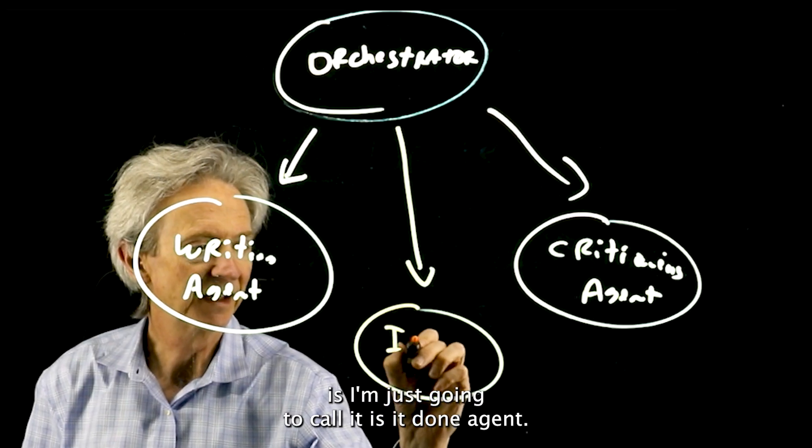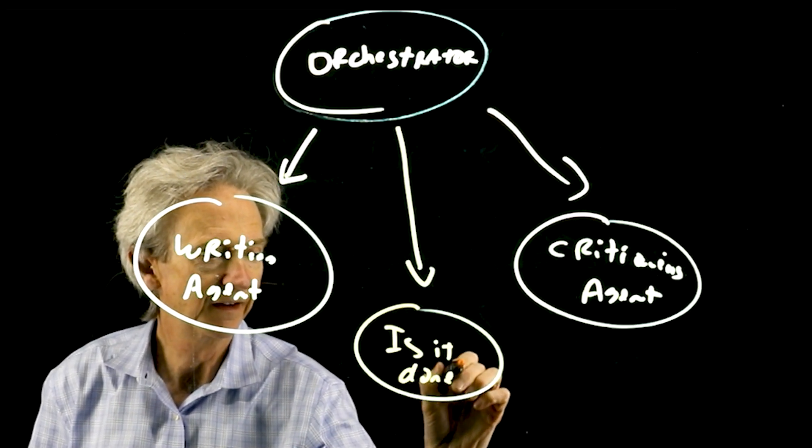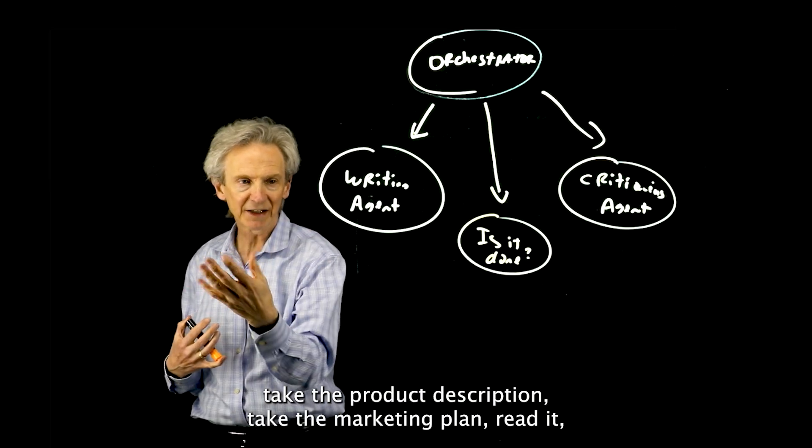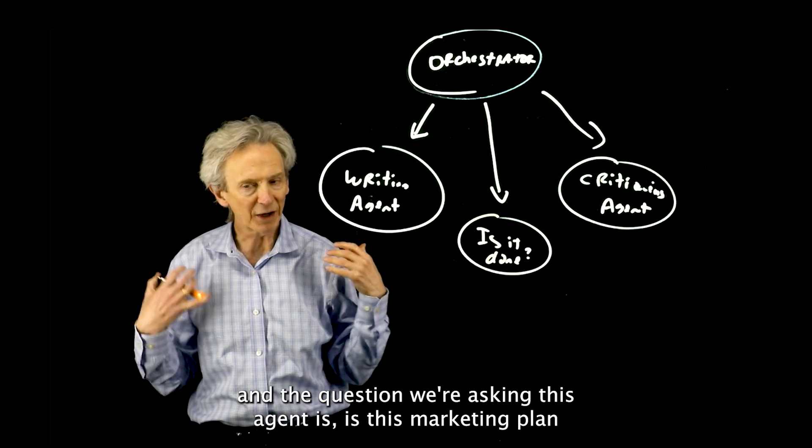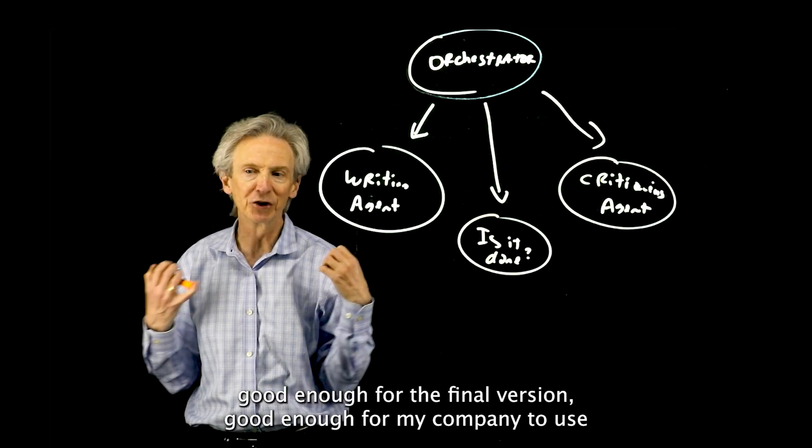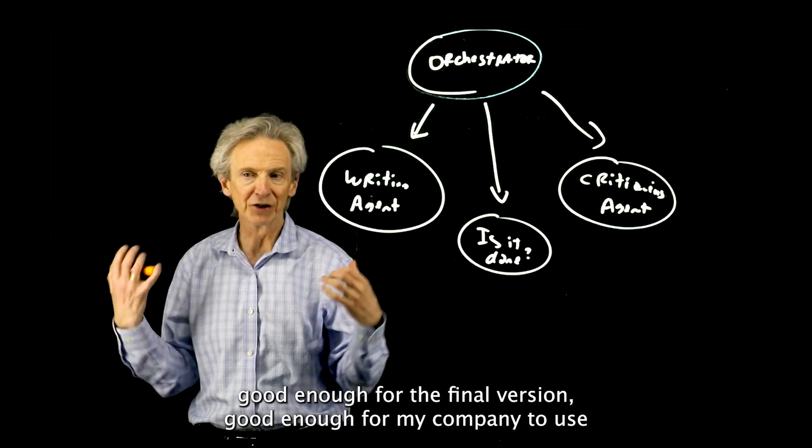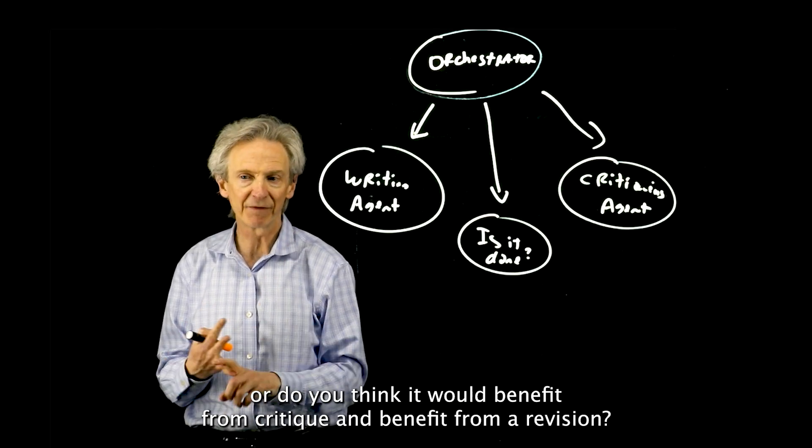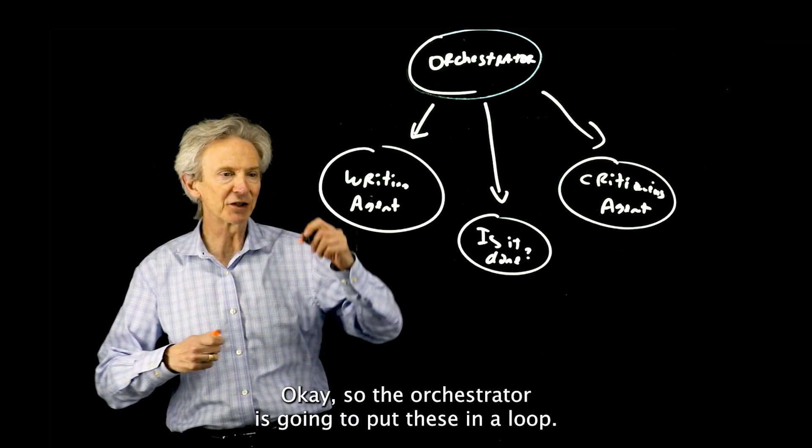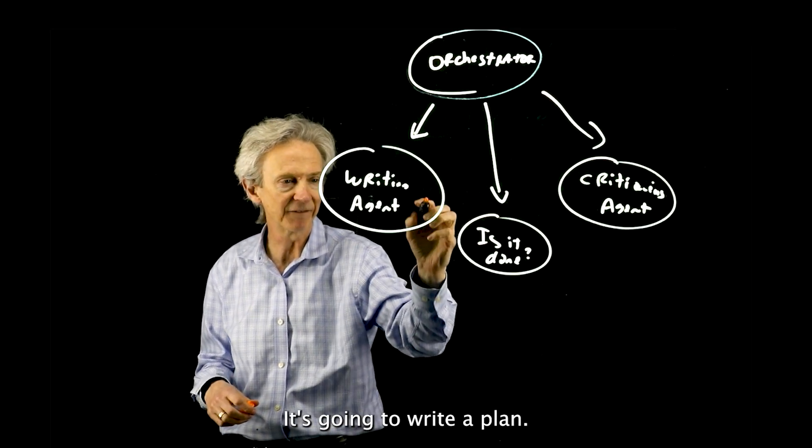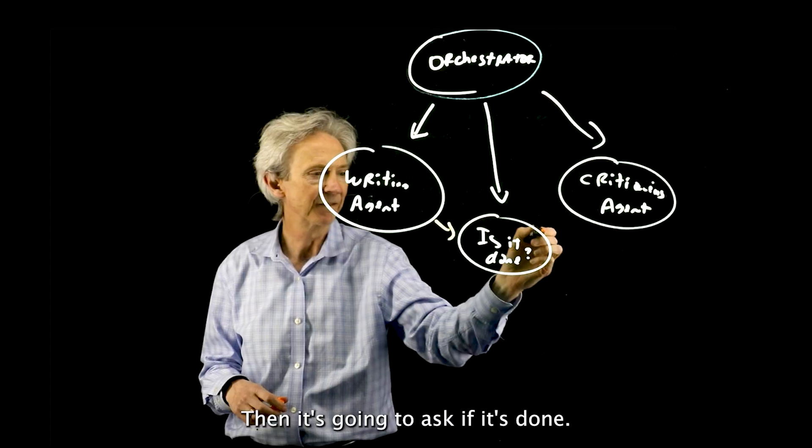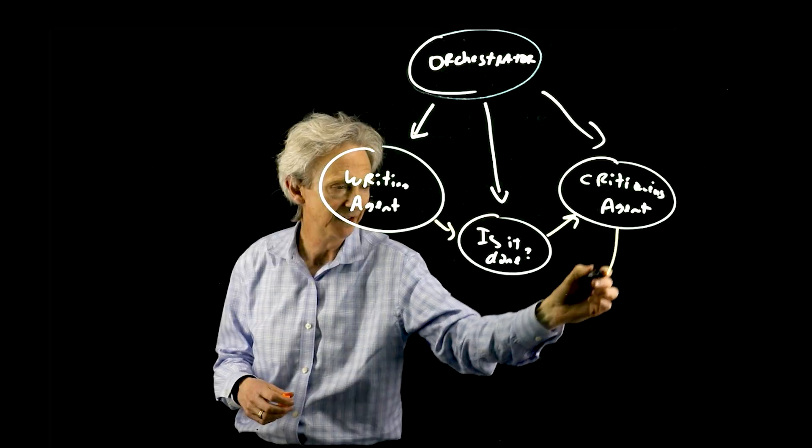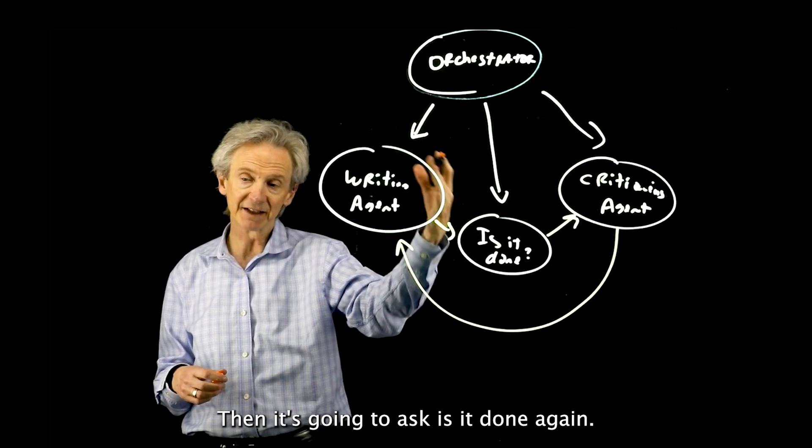Then what we're going to do is add a third agent here, and I'm just going to call it the is it done agent. Basically what this agent is going to do, it's going to take the product description, take the marketing plan, read it, and the question we're asking this agent is, is this marketing plan good enough for the final version, good enough for my company to use? Or do you think it would benefit from critique and benefit from a revision?